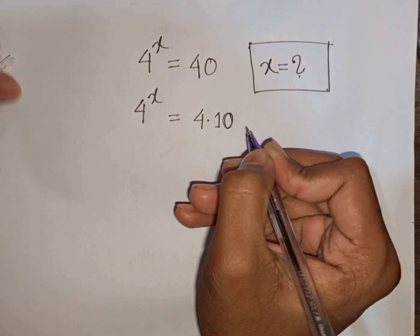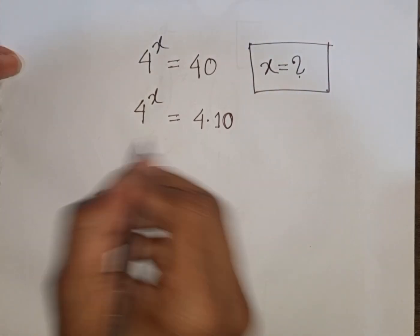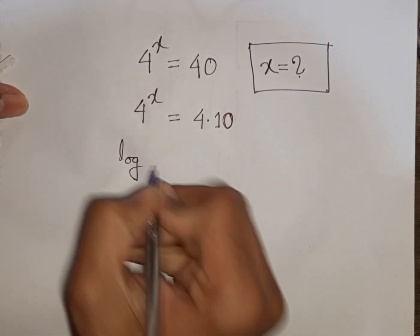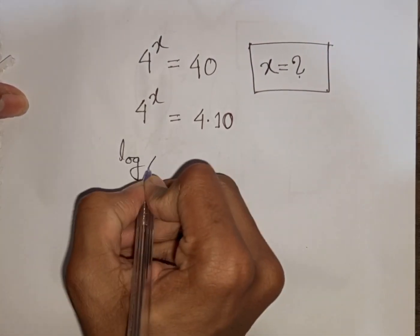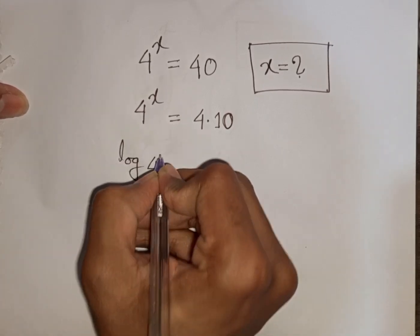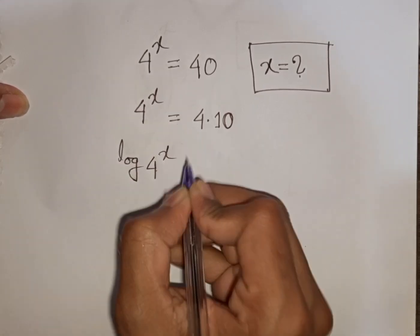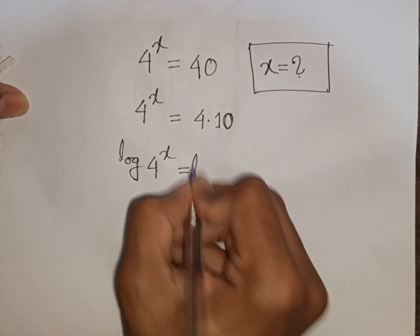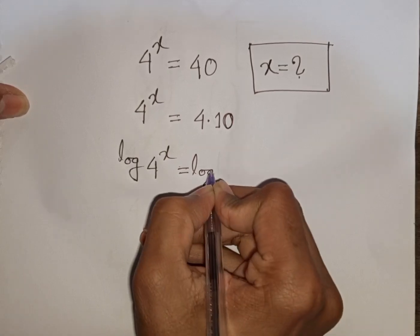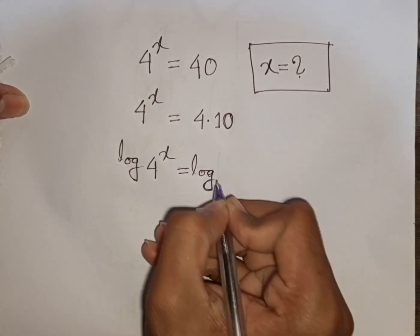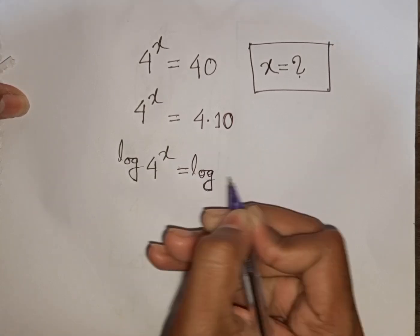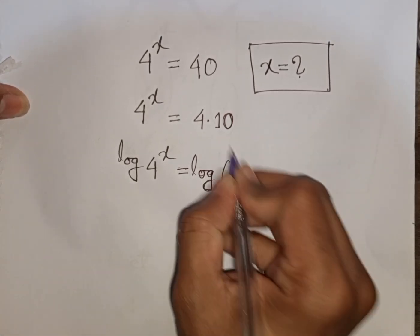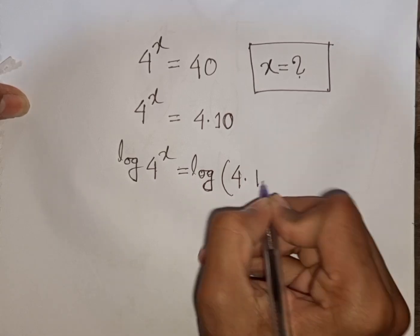Now, we apply log on both sides. So, we can write: log of 4 power x is equal to log of 4 times 10.